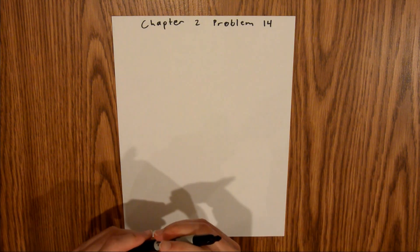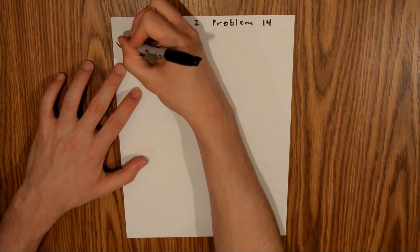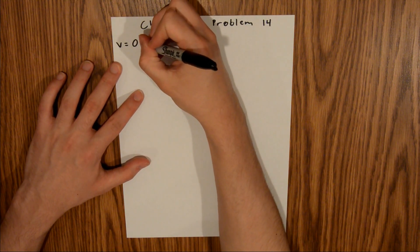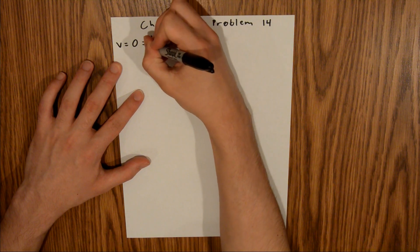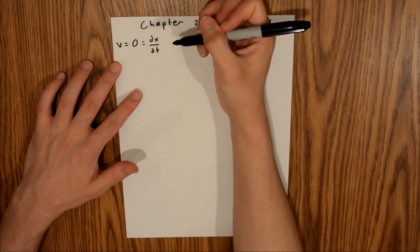If the electron is momentarily stopping, that means that the velocity is equal to 0. But we also know that velocity is equal to the derivative of x with respect to time, where x is the position.